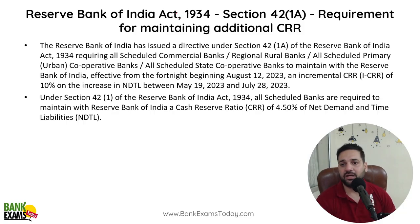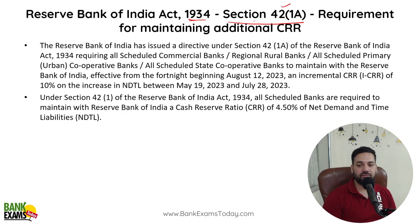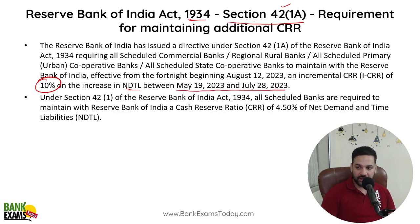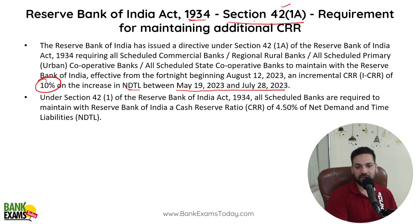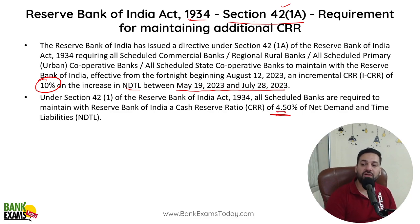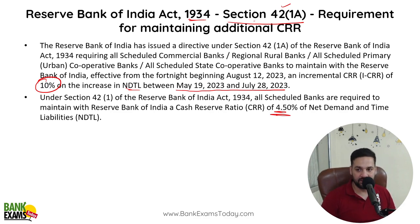So let's start with the Reserve Bank of India Act 1934, Section 42, Subsection 1A. There is a change — requirement for maintaining additional CRR. RBI has told banks that you need to maintain an additional 10% CRR for all the NDTL — net demand and time liabilities — between 19th of May 2023 and 28th of July 2023. The existing CRR is 4.5%, and now an additional 10% of that CRR must be maintained.